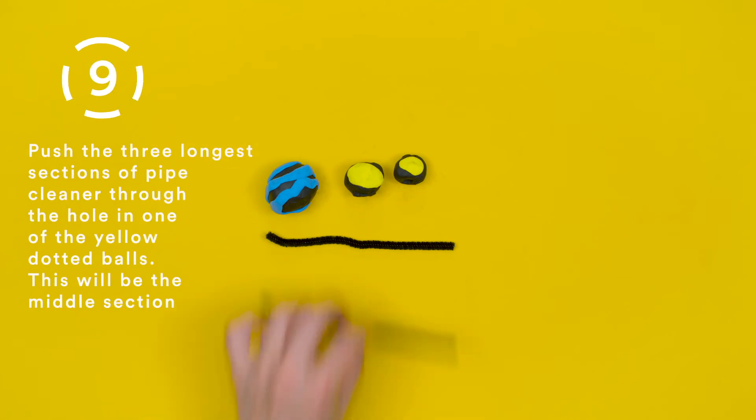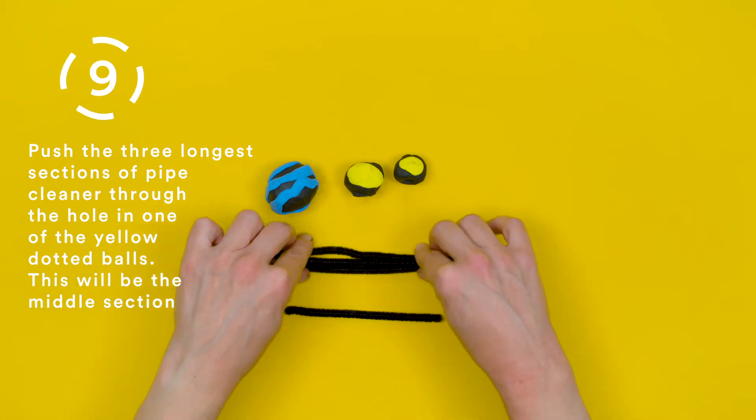Step 9. Push the three longer sections of pipe cleaner through the hole in one of the yellow dotted balls. This will be the middle section.